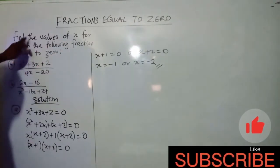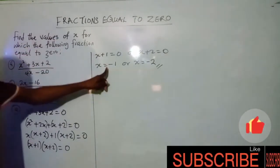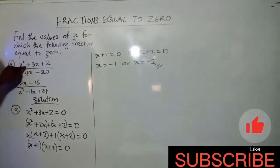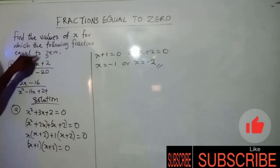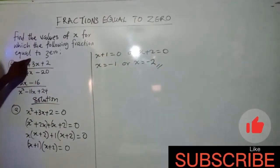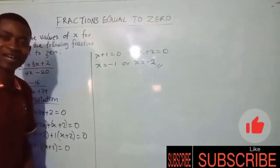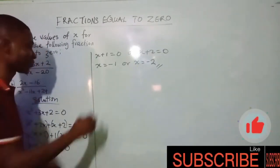In this question, for what values of x will this fraction equal zero? When x=-1, if you put it into this equation, you will get 0. Or if you put x=-2 into this fraction, you will also get 0. That is our answer. Very simple, isn't it? Not difficult at all.